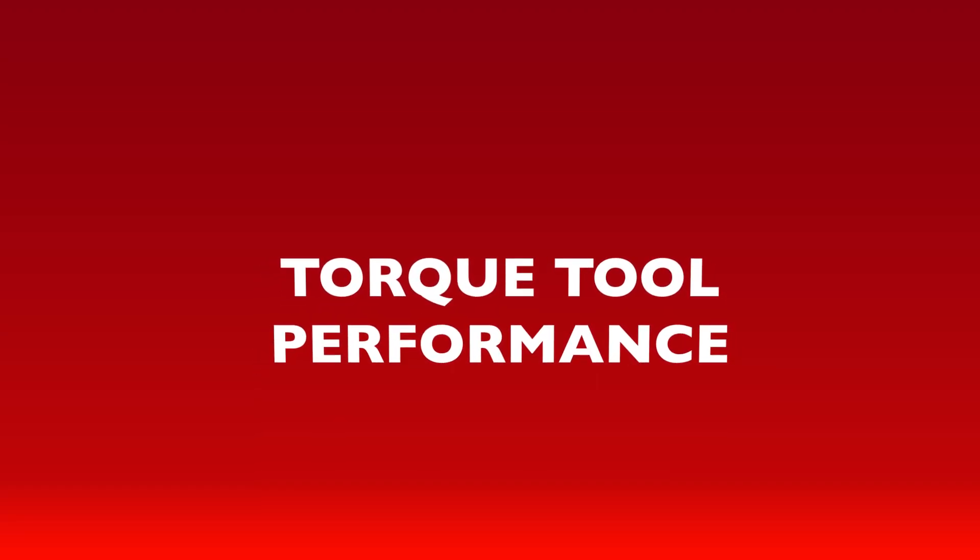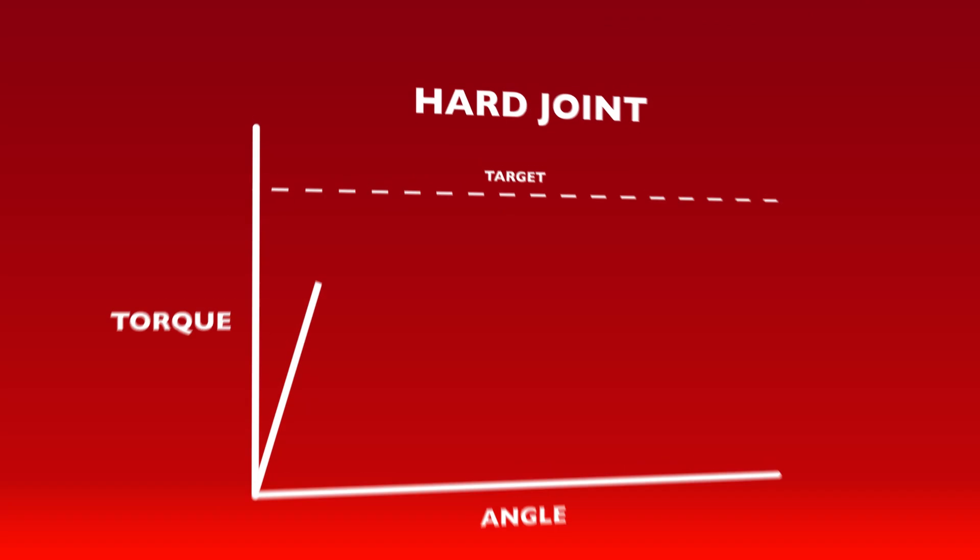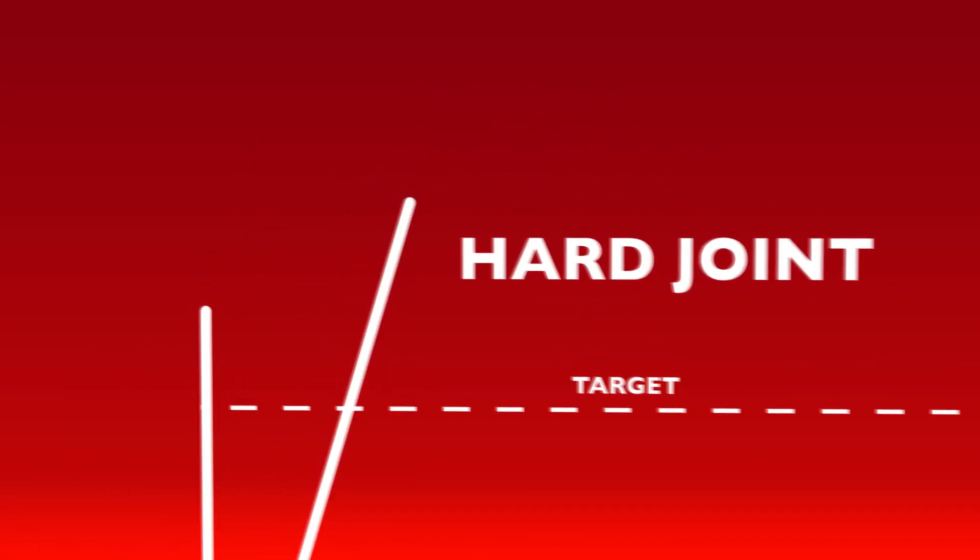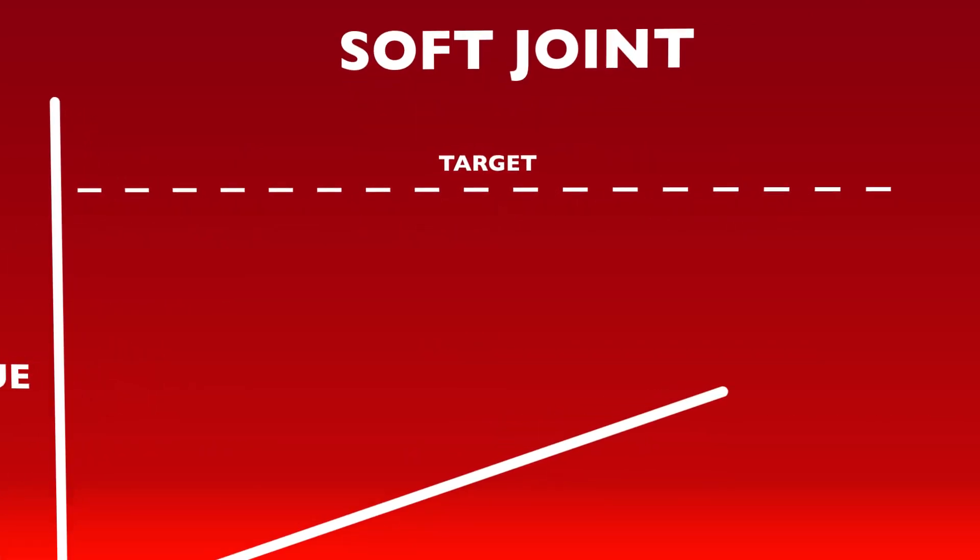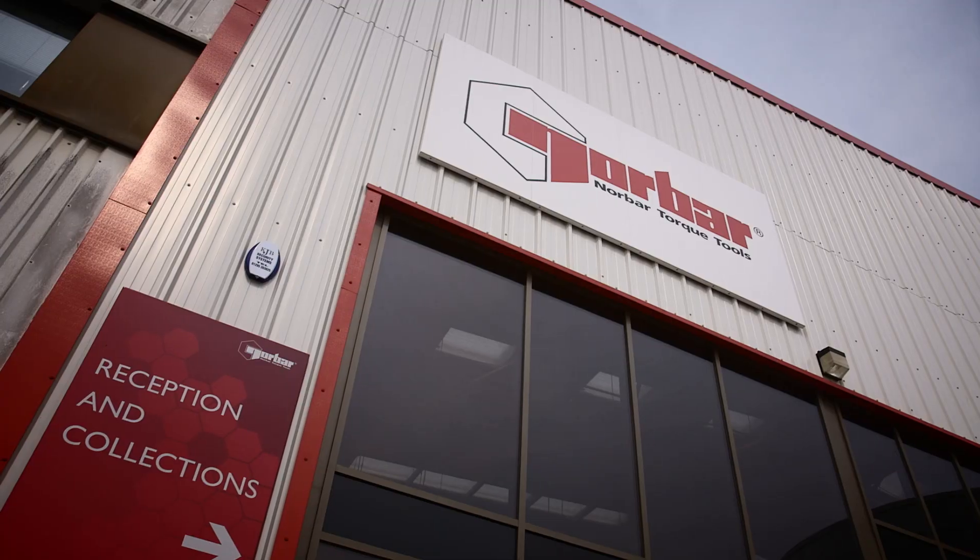Up until now, with electric torque tools, results revealed overshooting on hard joints and undershooting on soft joints.